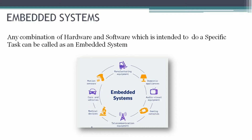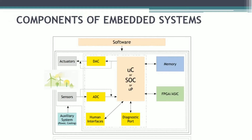So what is an embedded system? It is any combination of hardware and software which is intended to do a specific task — that can be called an embedded system. Some examples are shown in this figure, where systems are used in manufacturing equipment, domestic appliances, audio-visual equipment, gaming consoles, telecommunication equipment, medical devices, cars and vehicles, and motion sensors. These are some of the most common applications of embedded systems.